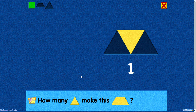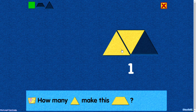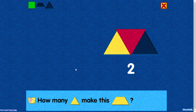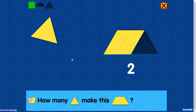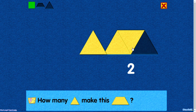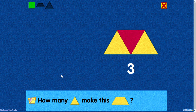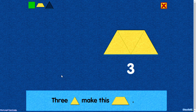How many triangles make this trapezoid? One. Two. That's right. You placed this triangle next to the center triangle. Three. Nice. Three triangles make this trapezoid.